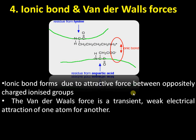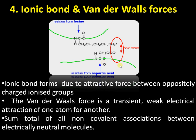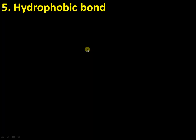Then there is van der Waals force, which is a transient, weak electrical attraction between atoms. It is the sum total of all other non-covalent associations between electrically neutral molecules. Van der Waals force is the weakest of these bonds, but altogether the large number of van der Waals force bonds within a protein molecule makes the structure more strong.